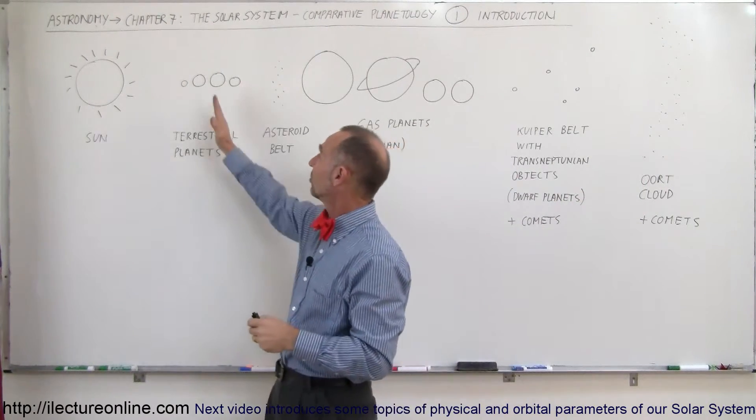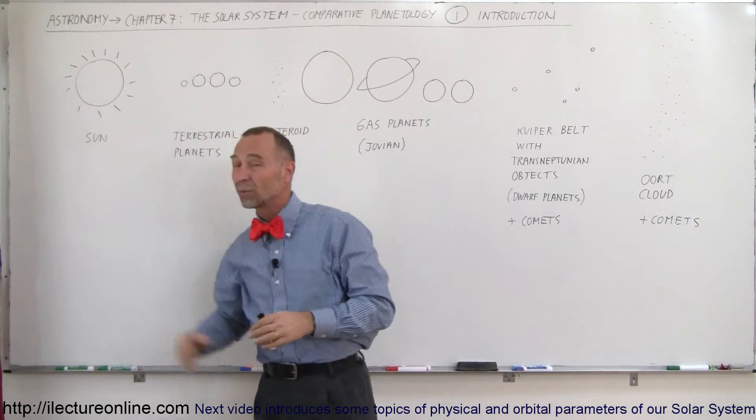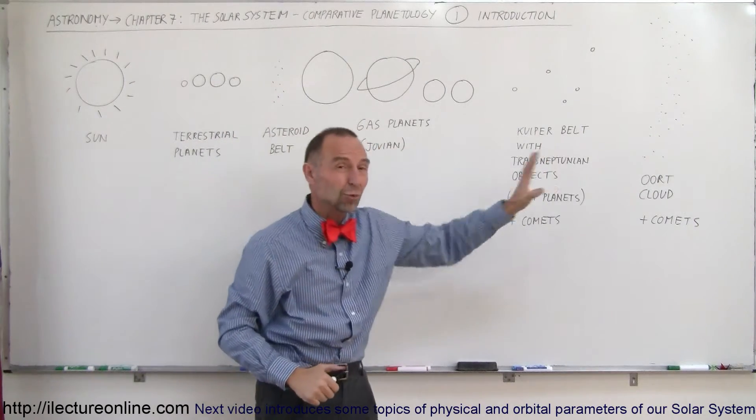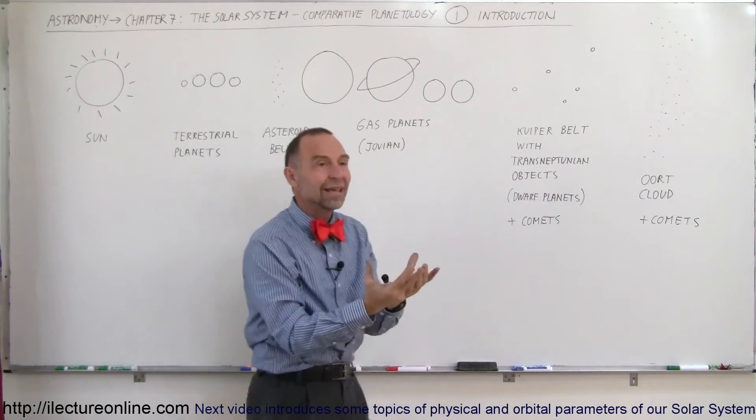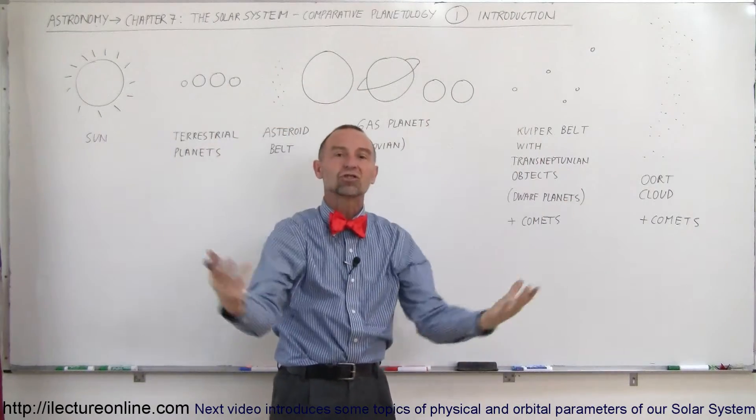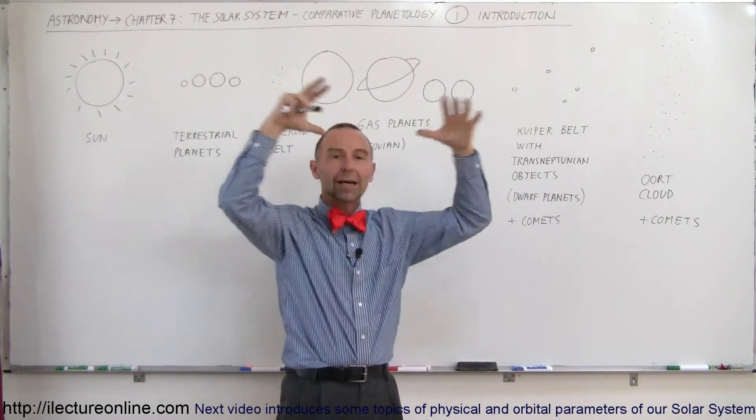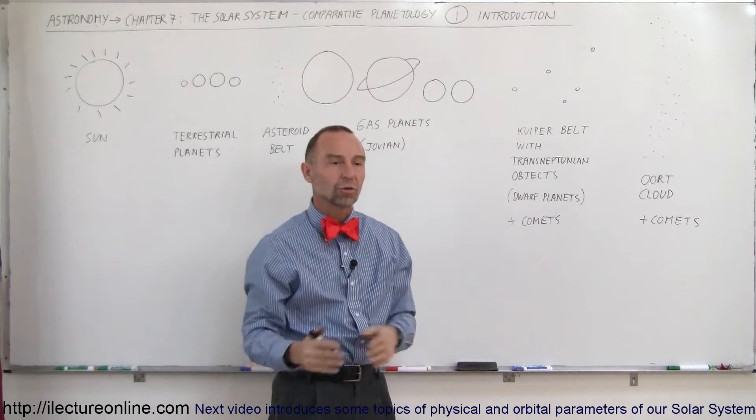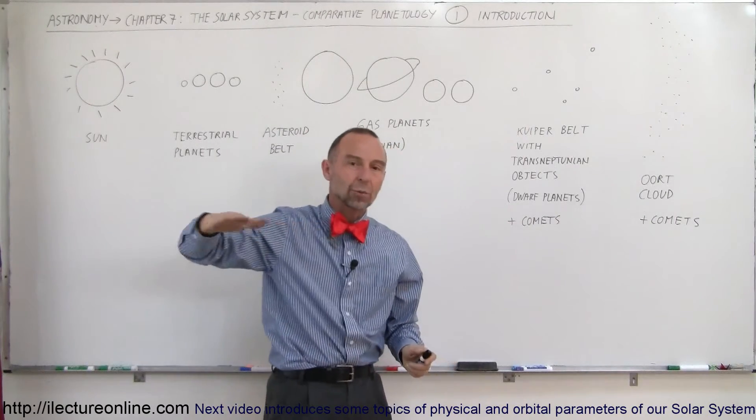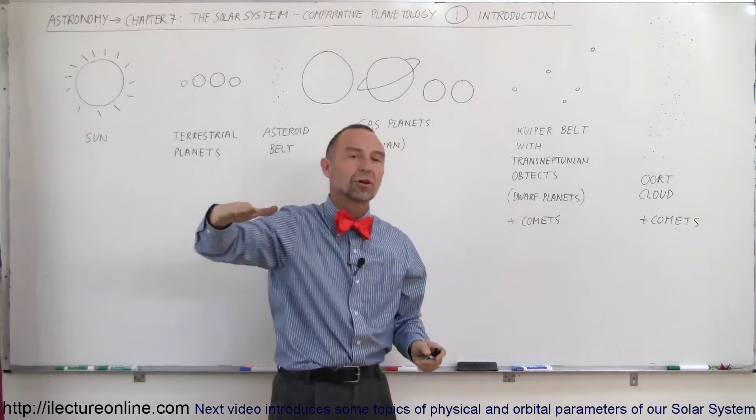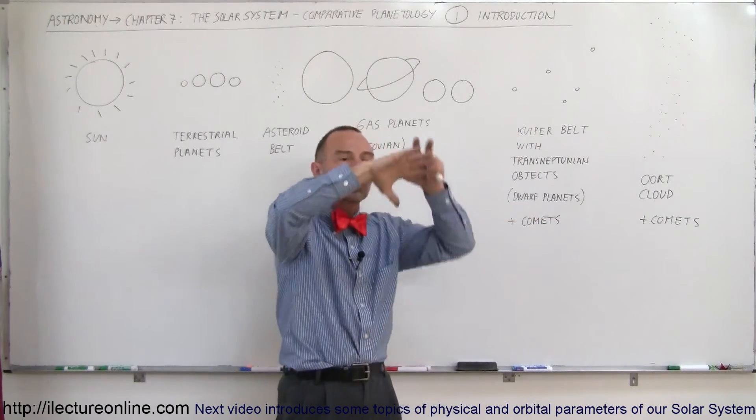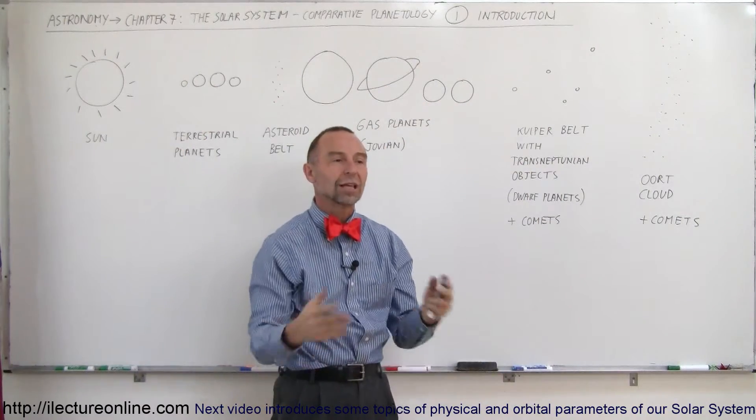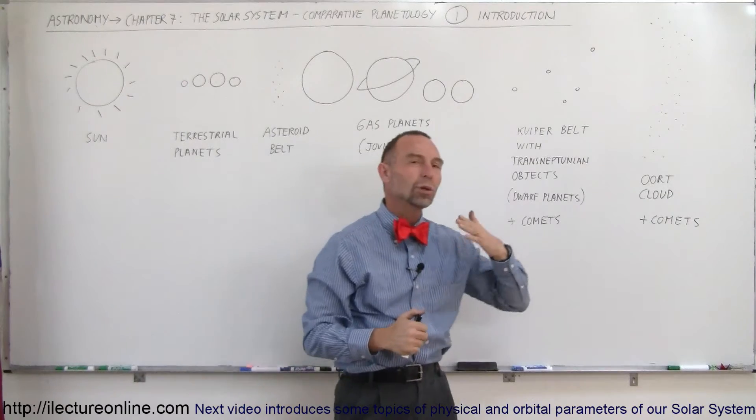Remember, an astronomical unit is the distance between the Earth and the Sun. So we're talking about way out there in the far reaches of the solar system is a kind of like a spherical-shaped region that encompasses the entire solar system. So not just the ecliptic where the planets and the asteroid belts are and the moons and everything else,